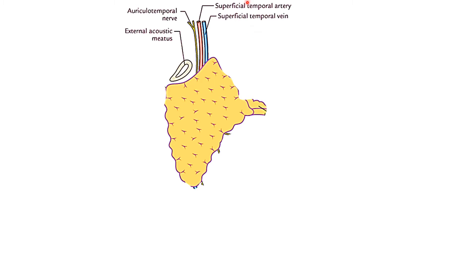Remember the word temporal for these structures. The nerve here is the auriculotemporal nerve — the word temporal is already in its name. This nerve supplies not only the skin of the temporal region but also the skin of the auricle, which is placed near the external acoustic meatus — so that is why it is called the auriculotemporal nerve. It is a branch of the mandibular nerve. We have three structures emerging from the base, and you can remember them by VAN: Vein, Artery, and Nerve. The vein and artery are the superficial temporal vein and superficial temporal artery, and the nerve is the auriculotemporal nerve. The nerve will be more posteriorly placed, closer to the auricle.